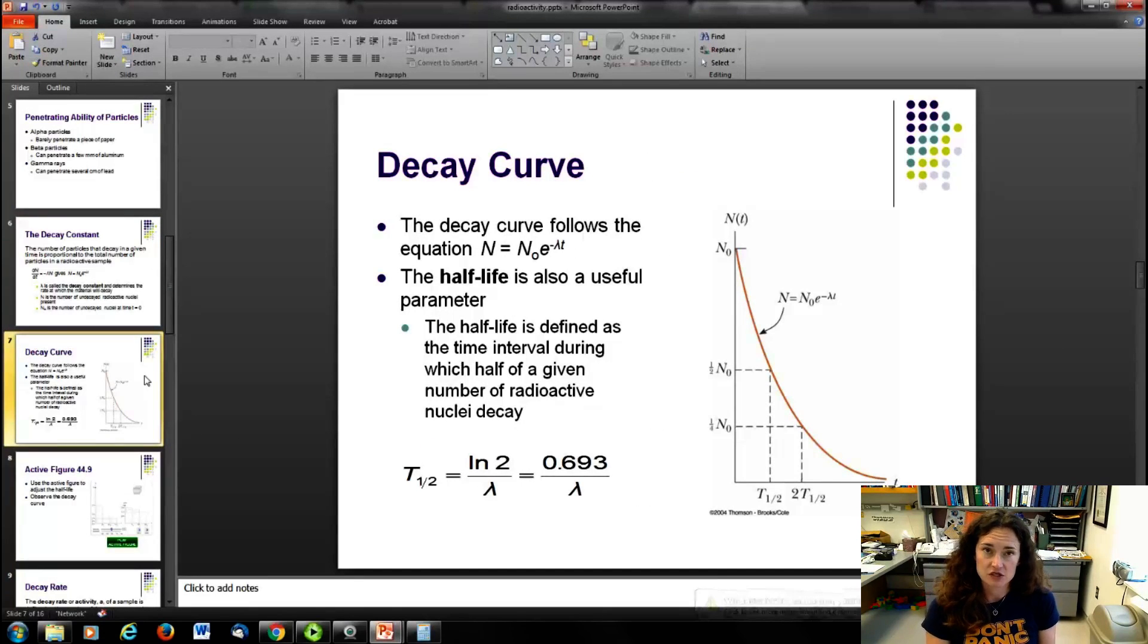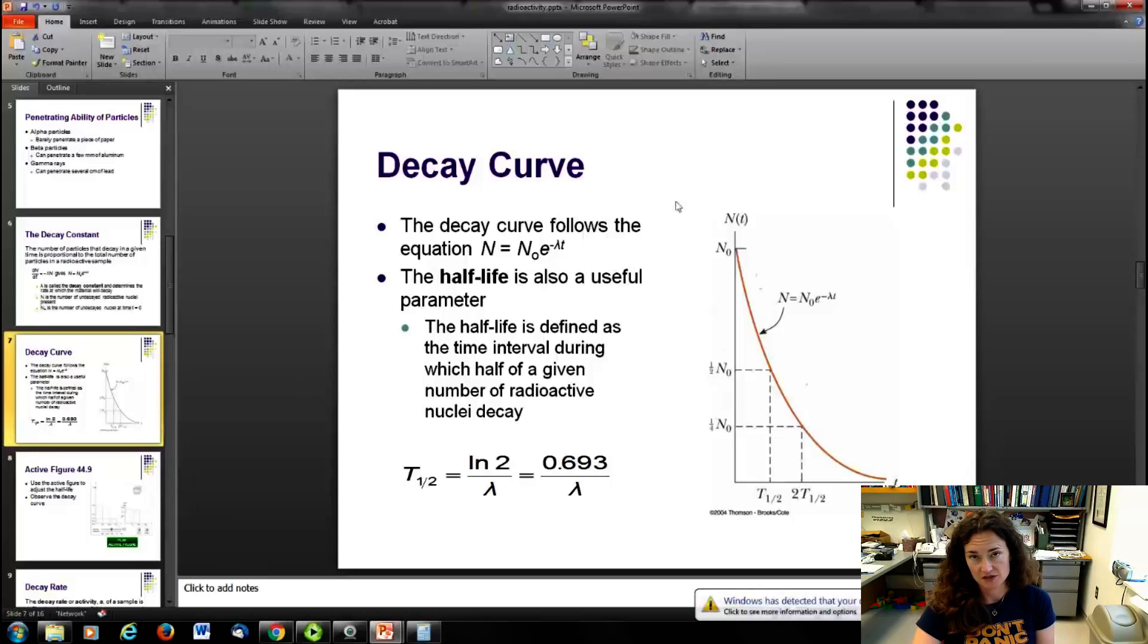Now, the half-life is a useful parameter that gets cited a lot in the charts. In fact, you have an appendix at the end of your book that gives you the half-life for a lot of different isotopes of elements. So you can look those up. You'll need to do that for some of the problems that you'll be assigned in the chapter. You'll have to use the appendix at the end of the book maybe to determine the half-life. Now, the half-life is the time interval during which half of a given number of a radioactive sample will decay.